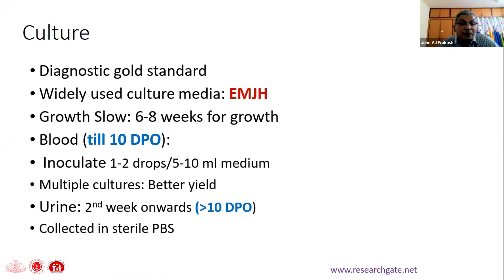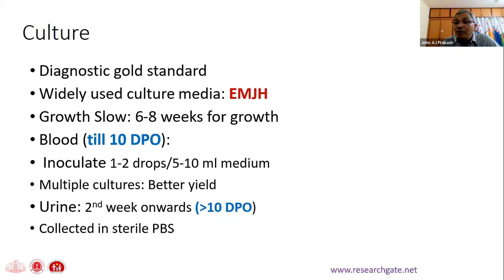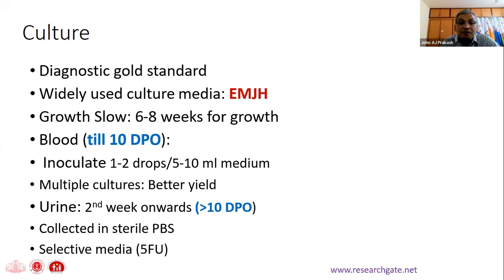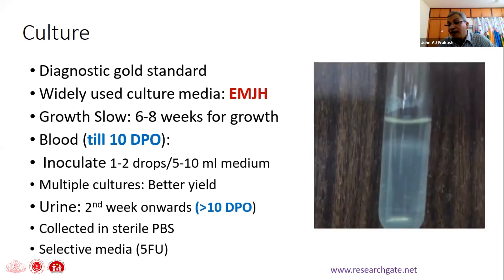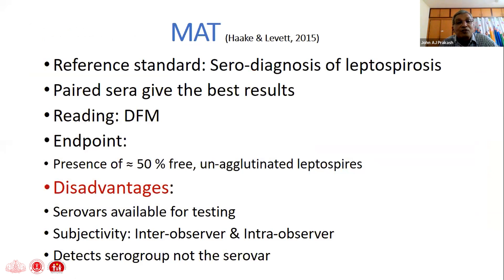For urine culture, positivity occurs from the second week onwards. An important hint: collect urine in sterile phosphate buffer saline, because leptospires are quite delicate and may become non-viable during the 15–20 minutes between collection and inoculation into medium. Selective media are also needed due to contamination from other cells in the urine. The Dinger ring can be seen in the tube once growth occurs, even in EMJH medium.